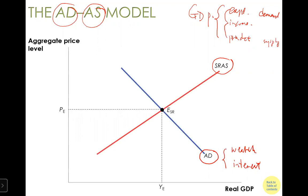Then we look at aggregate supply, starting with short-run aggregate supply. The short-run aggregate supply is upward sloping because as price increases, aggregate supply increases — firms want to produce more in the short run if price increases. This is coming from sticky wage. When they cross, we enter a short-run equilibrium.